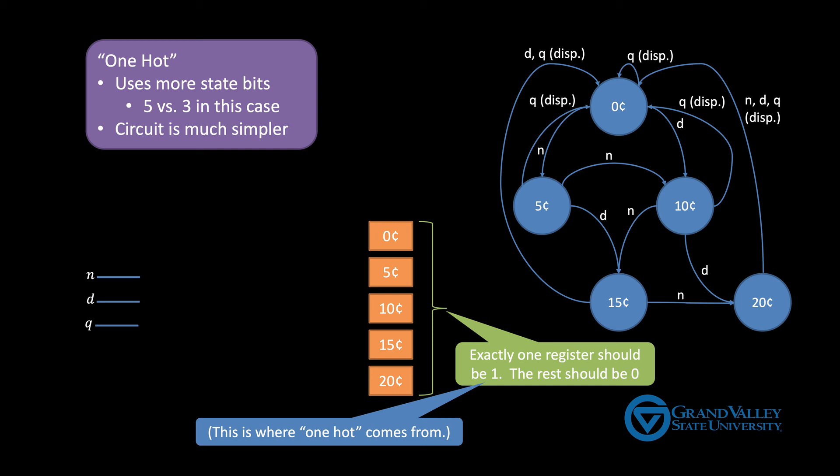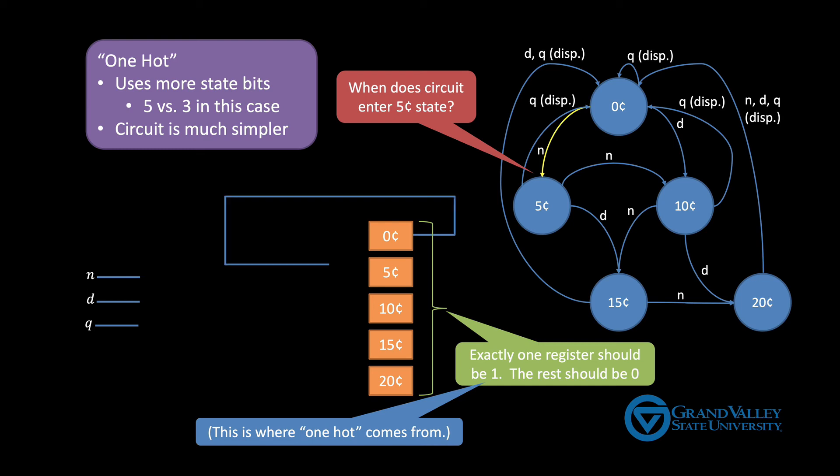Using this one hot technique, we can build the circuit directly from the finite state diagram. We don't need to go through the truth table. So for example, when should the circuit enter the five cent state? Well, if you look at the state diagram, you'll see that there's only one transition into this state, which means the five cent state becomes one only when we're currently in the zero cent state and the customer inserts a nickel.